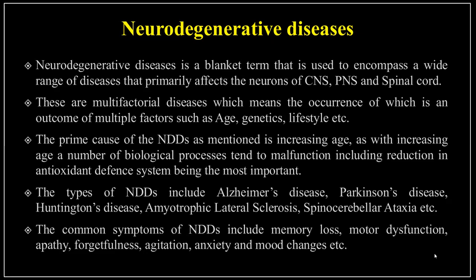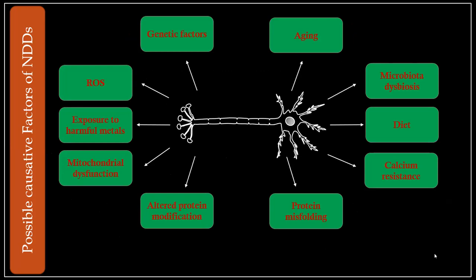The types of NDDs include Alzheimer's disease, Parkinson's disease, Huntington's disease, amyotrophic lateral sclerosis, and spinocerebellar ataxia. Common symptoms include memory loss, motor and sensory dysfunction, apathy, forgetfulness, agitation, anxiety, and mood changes. Causative factors include genetics, aging, microbiota dysbiosis, diet, calcium dysregulation, protein misfolding, altered protein modification, mitochondrial dysfunction, exposure to harmful metals, and importantly, reactive oxygen species generation leading to oxidative stress.